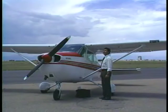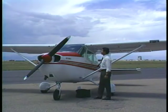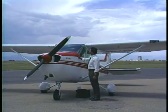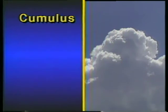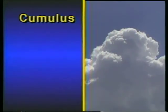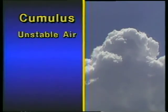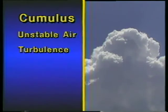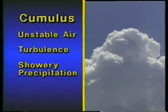Air mass stability plays a large role in the development of weather. We can best see this role in the development of clouds. There are two basic types of clouds: cumulus and stratus. Cumulus clouds are formed by rising currents of air, which gives them a piled-up or bunched appearance. They warn of unstable air, turbulence, and showery precipitation.